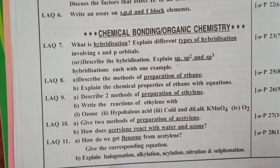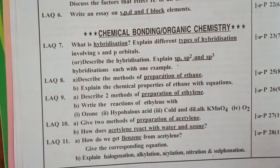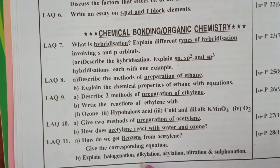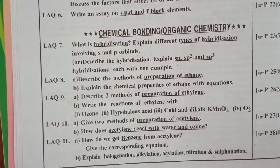Next question, how do we get benzene from acetylene? It is also very important. Explain halogenation, alkylation, acylation, nitration, and sulfonation. This is very important. We have to explain all these terms.